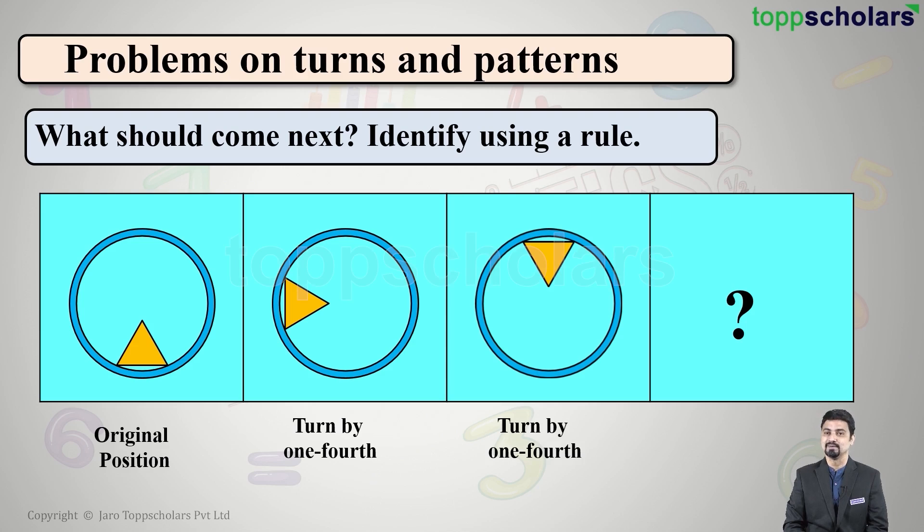So how will I get the fourth position? By turning one-fourth further. So let's turn it in clockwise direction, how much? One-fourth. And we get the next in that pattern. If you have understood this, shall we try the next pattern?